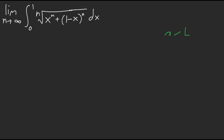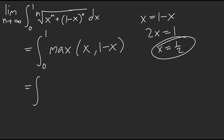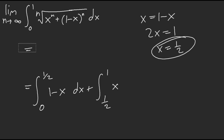Can we do the same thing with this integral? Yes, you can. Since we know how that limit works, this integral becomes the integral of the max of x and 1 minus x. Now you split the domain. Where do they intersect? Set x equal to 1 minus x: 2x equals 1, so x equals 1/2. That's where we split the domain. From 0 to 1/2, plugging in 1/4 shows that 1 minus x is bigger.